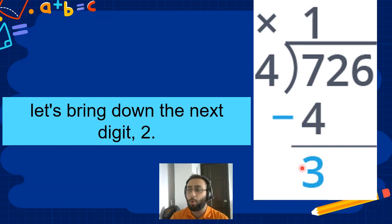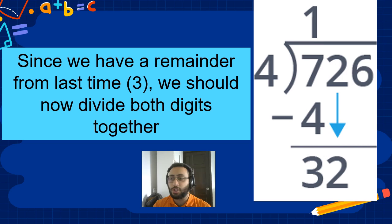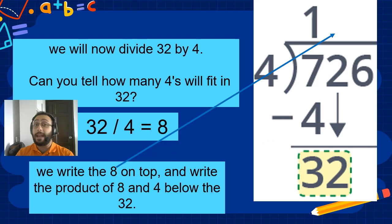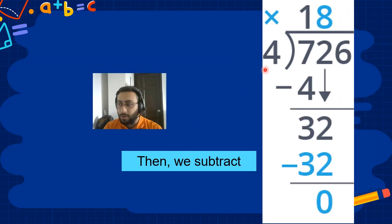Pretty easy. So what do we do? We bring the next digit down here — 32. Now, how many 4's fit into 32? Easy answer: 32 divided by 4 equals 8. So we write 8 up here. 8 times 4 equals 32. We subtract. We got 0.